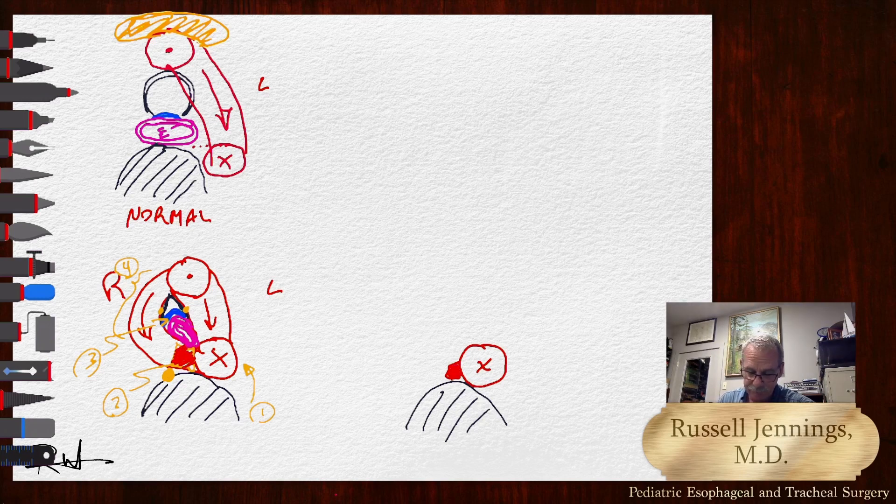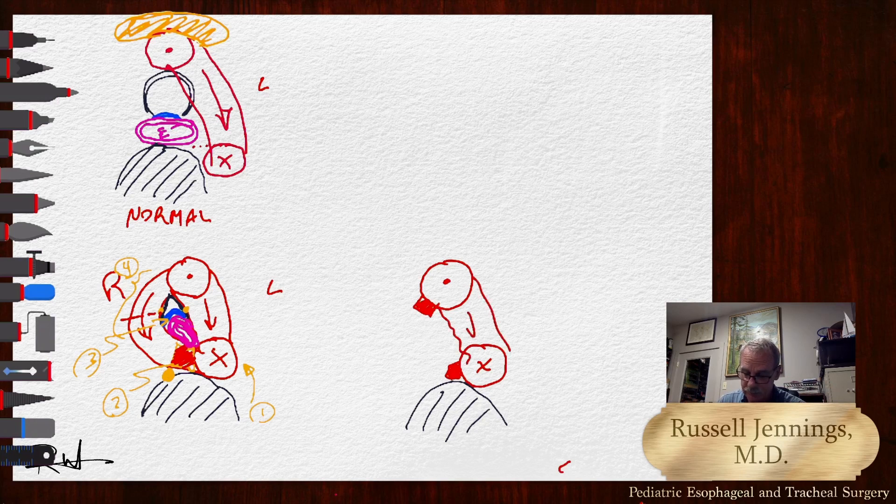We leave that little stump. We've divided that right arch. We divide it right here. And we leave a little stump here. And we have now sort of released the trachea and the left arch.